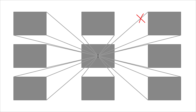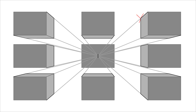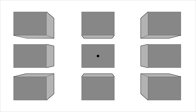In one-point perspective, whenever you want to draw a vertical line, you have to draw it vertical. If it's a horizontal line, you have to draw it horizontal. But if you want to draw something in depth, your line should go through the vanishing point. Now that we know how deep it is, we can draw the vertical and horizontal lines. Let's do the same for the other cubes. Now we can clearly see the edges — it's time to fill the shapes and remove extra lines. There it is: we have nine cubes in one-point perspective.